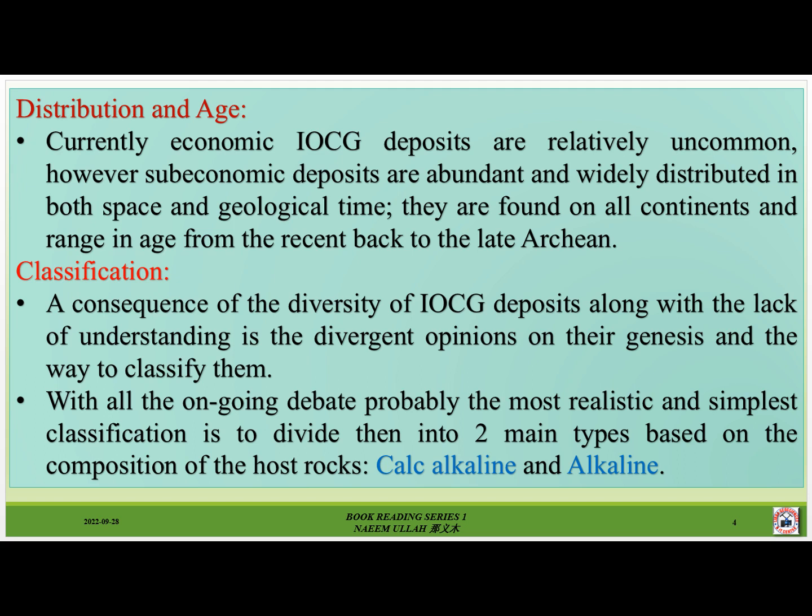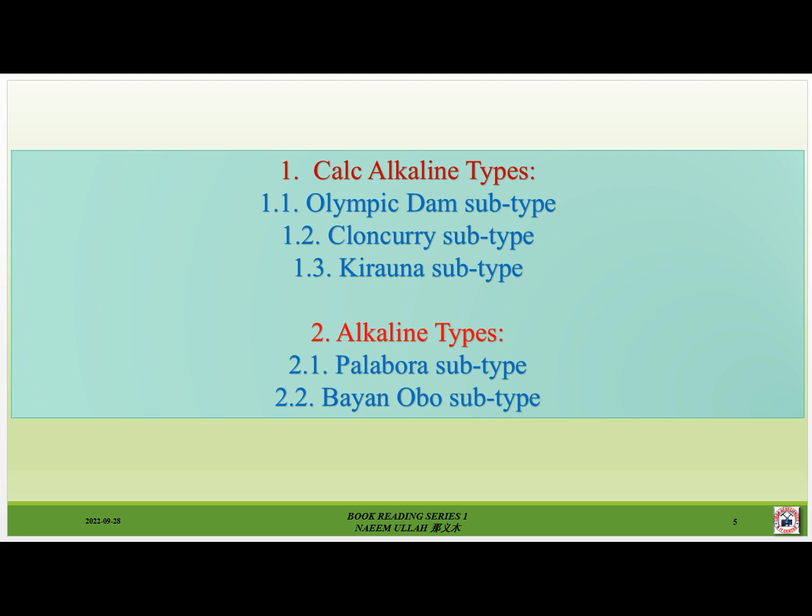A consequence of the diversity of IOCG deposits, along with the lack of understanding, is the divergent opinions on their genesis and how to classify them. With all the ongoing debate, probably the most realistic and simplest classification is to divide them into two main types based on the composition of the host rocks: calc-alkaline and alkaline.